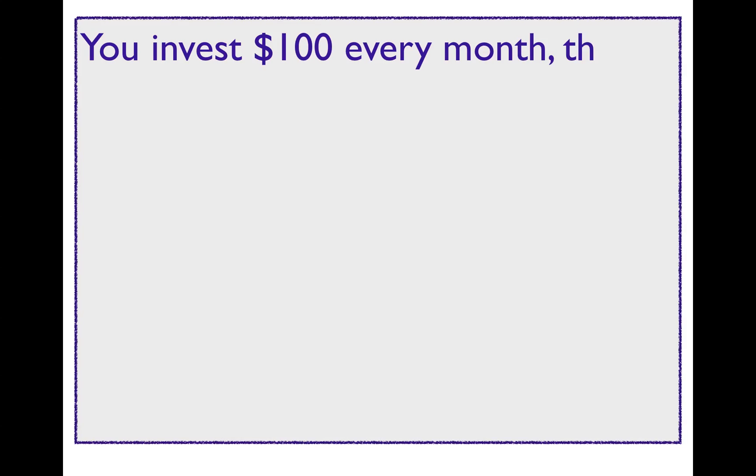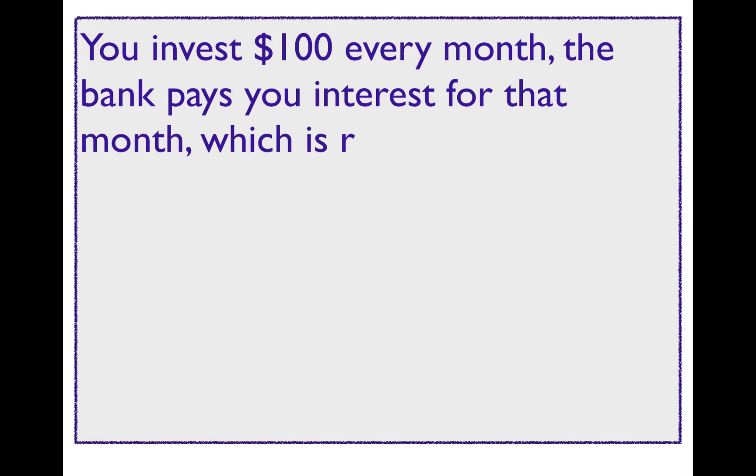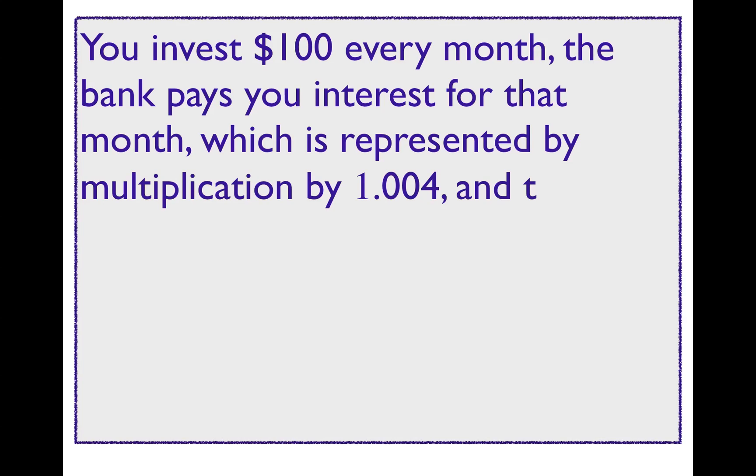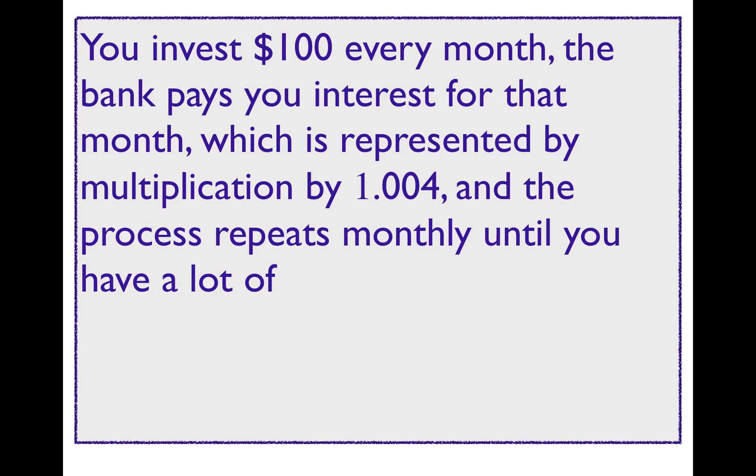You invest $100 every month. The bank pays you interest for that month, which is represented by multiplying by the number 1.004. And the process repeats monthly until you have a lot of money.